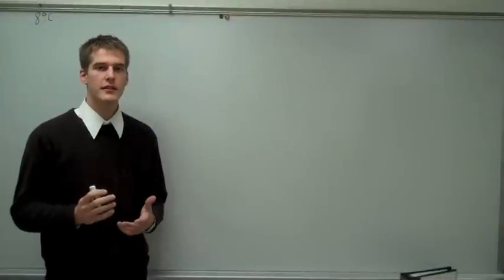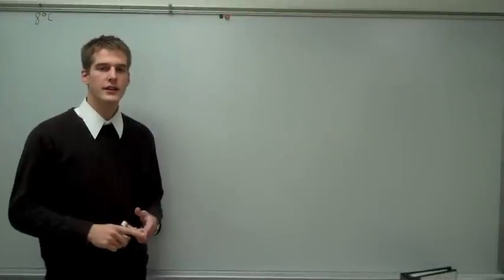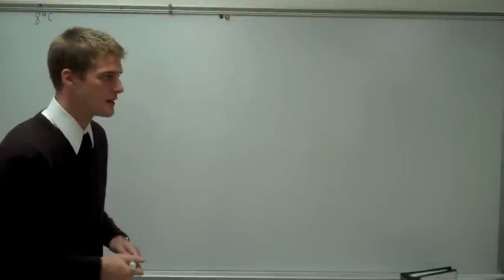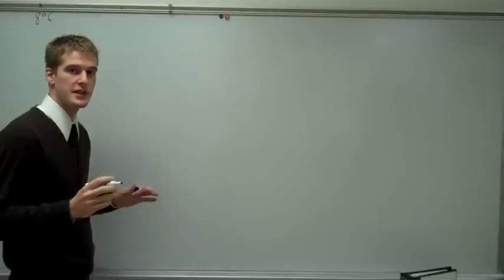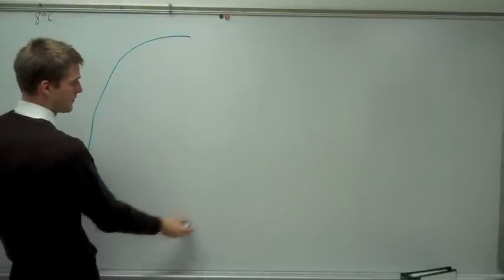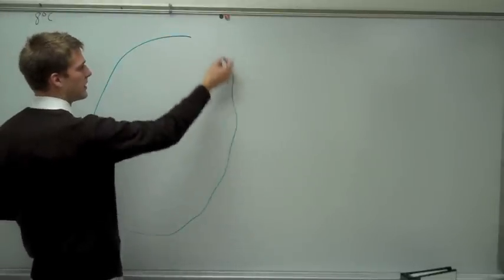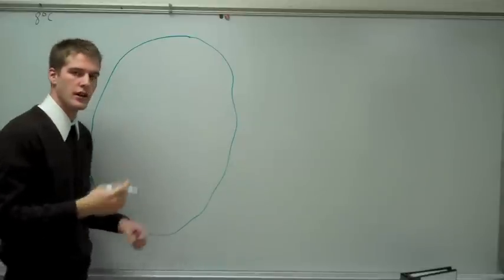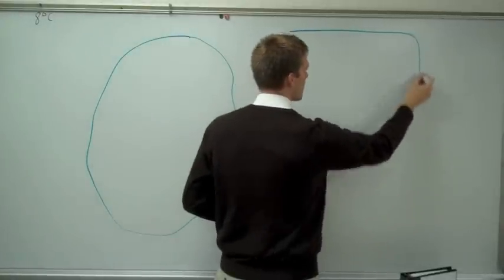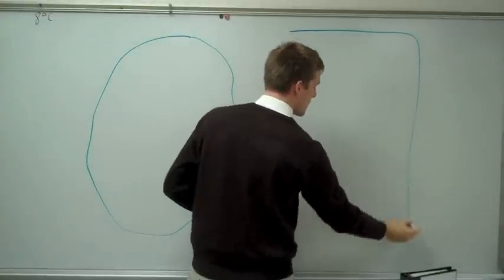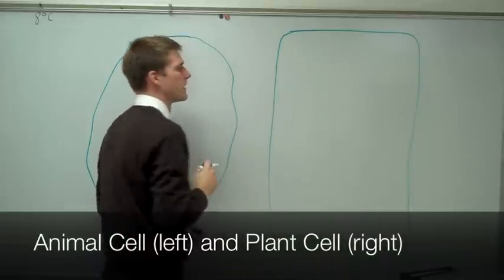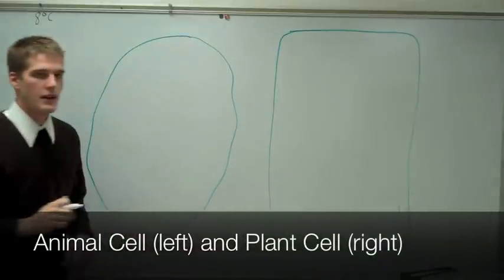As you remember from the cell theory, all living things are made of cells. Today we're going to talk about what makes up a cell. We have two types of cells: an animal cell, which is really any shape — usually round — and then a plant cell.